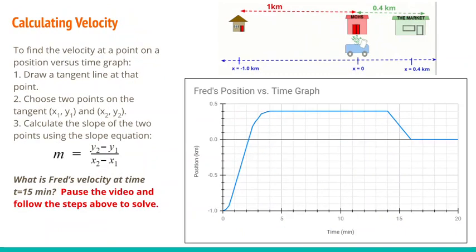To find velocity at a point on the position versus time graph: draw a tangent at that point, choose two points on the tangent — (x1, y1) and (x2, y2) — and use the slope equation: y2 minus y1 over x2 minus x1. Let's find Fred's velocity at time 15 minutes. Go to the graph at 15 minutes and draw your tangent. Pick two points on the line and use the slope equation to find the velocity, making sure the first point comes first in the graph.